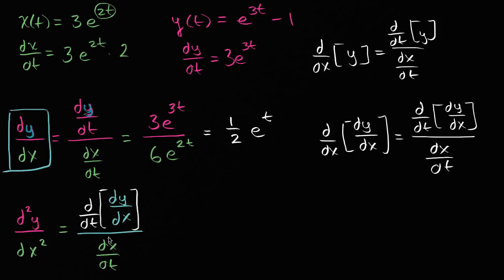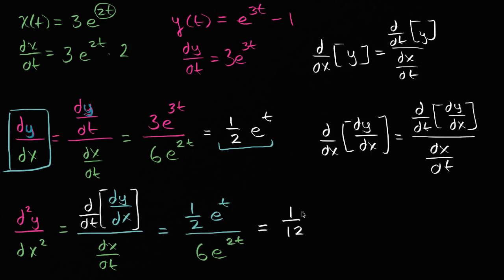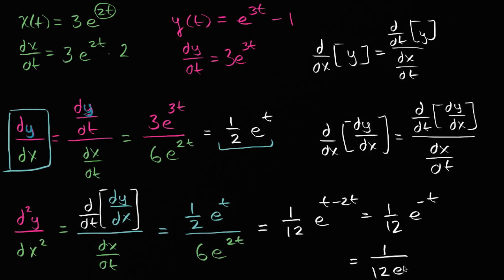This might seem daunting, but these are actually fairly straightforward to evaluate. Taking the derivative with respect to t of the first derivative — that's just the derivative of one half e to the t — the derivative is just one half e to the t. That's going to be over the derivative of x with respect to t, which we already saw is six e to the 2t. So we can write this as one half divided by six, which is one over twelve, times e to the t minus 2t, which equals one twelfth e to the negative t, or one over twelve e to the t. And we're done.